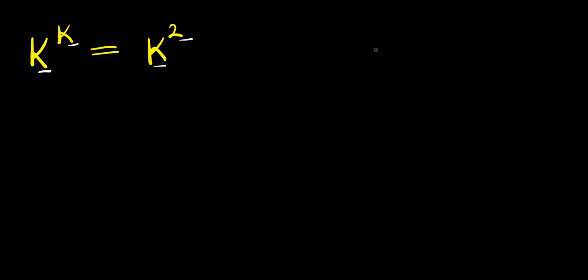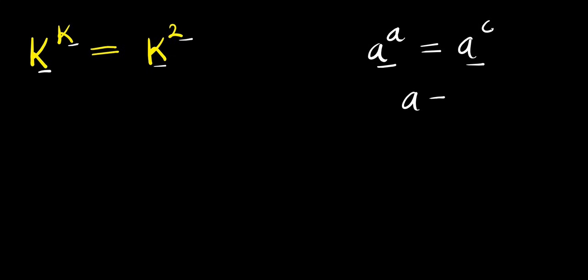Consider this identity: if you have a to the power of a equals a to the power of c, now since the bases are the same, you compare the exponents and you have a equals c. So using that identity here, I can have k equals 2.